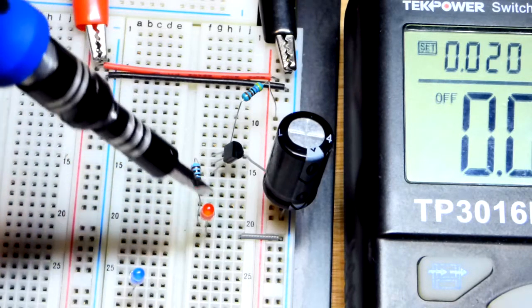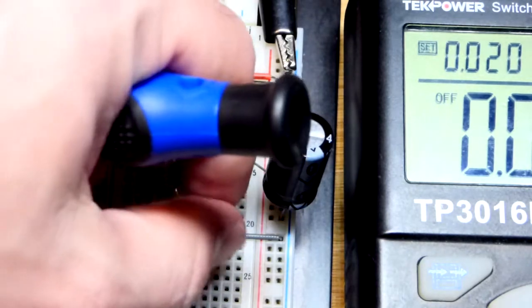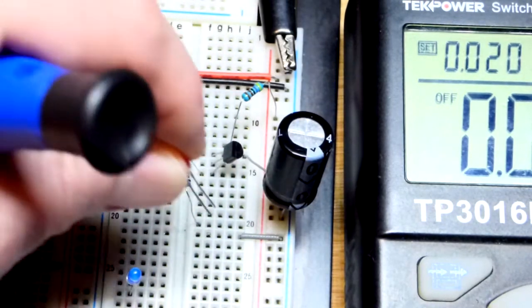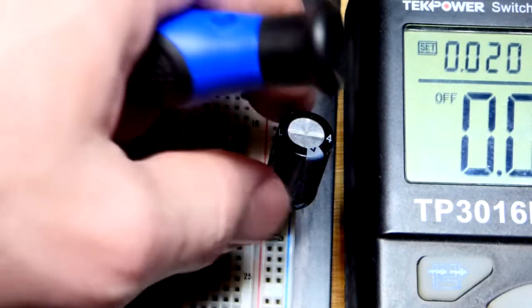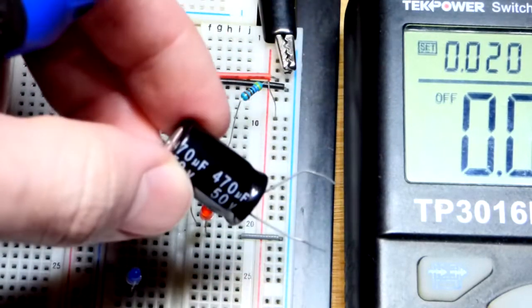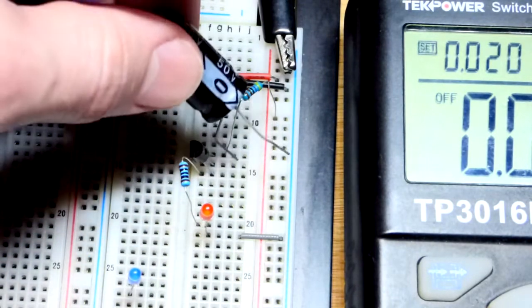The collector to the 100 ohm resistor and the LED you got to remember to put in the right way. Long lead, the anode to the resistor and the short lead, the cathode, down there. The capacitor is 470 microfarad right there.